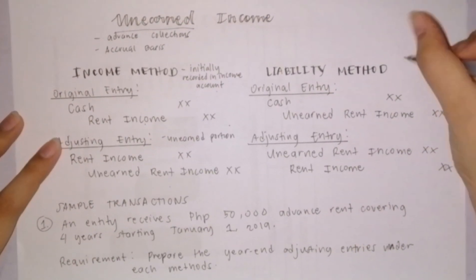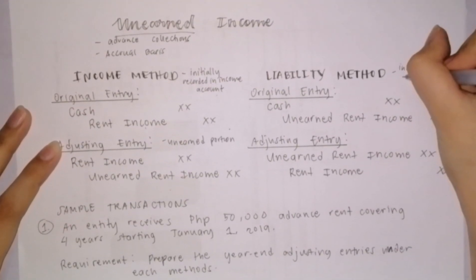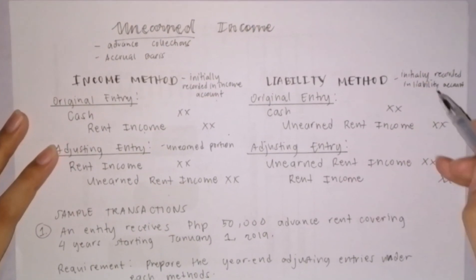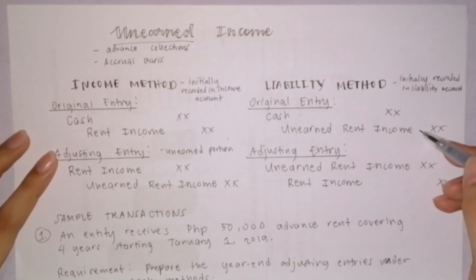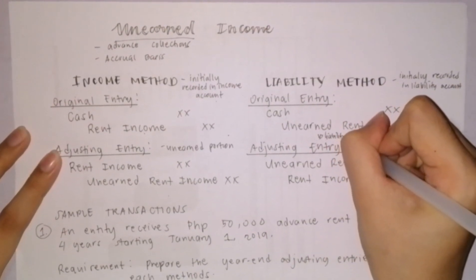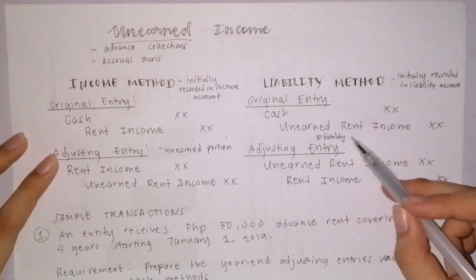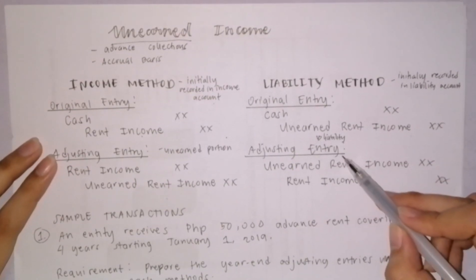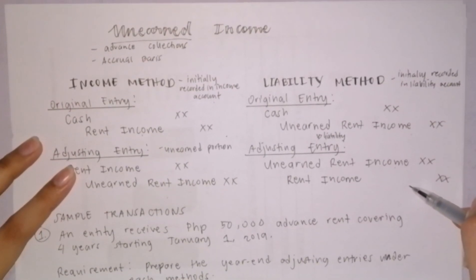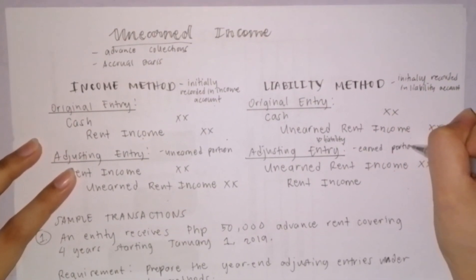The next method is the liability method. Here, cash receipts are initially credited to a liability account. Whenever the company receives advance collections from its customers, it goes directly to the liability account. The original entry is: debit cash and credit unearned rent income, which is a liability account seen under current liabilities. The adjusting entry using the liability method would be a debit to unearned rent income and credit to rent income. This time, we record the earned portion — what is already considered income.